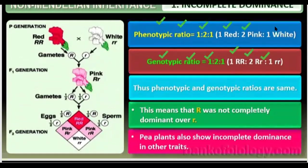In the phenotype, we get red, pink, and white flowers. In the genotype, we get a completely dominant, completely recessive, and a heterozygous organism. Thus, phenotypic and genotypic ratios are the same — meaning capital R was not completely dominant over small r. Pea plants also show incomplete dominance in other traits.